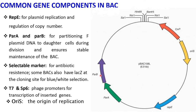ParA and parB ensure stable maintenance of the BAC. There are also selectable markers for antibiotic resistance. Some BACs also have lacZ at the cloning site for blue-white screening.